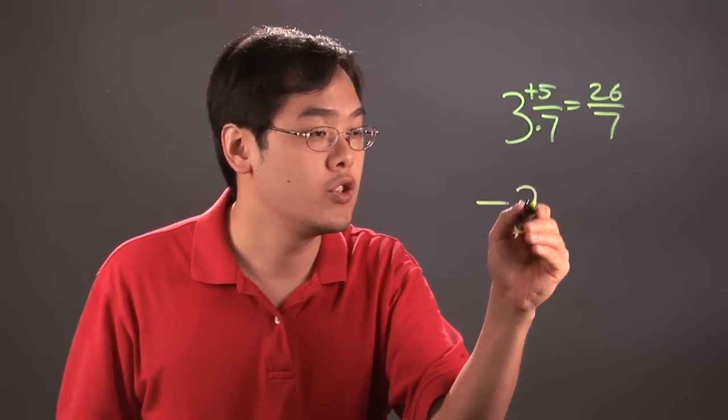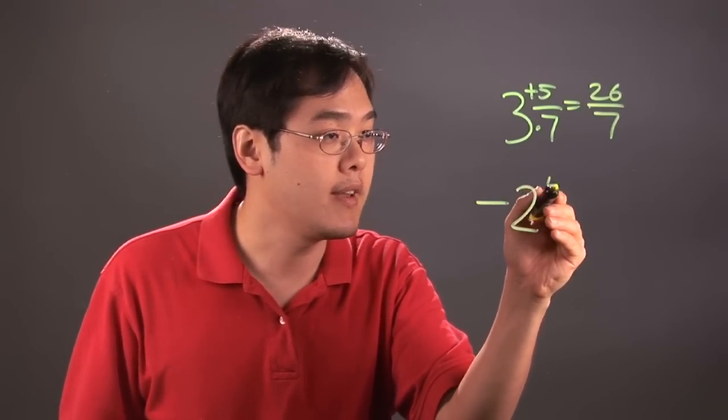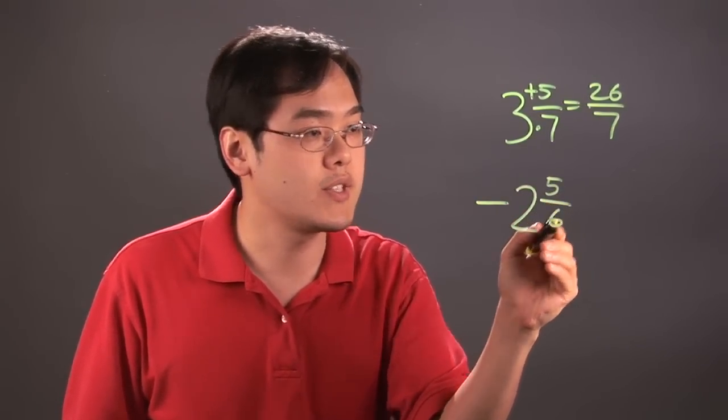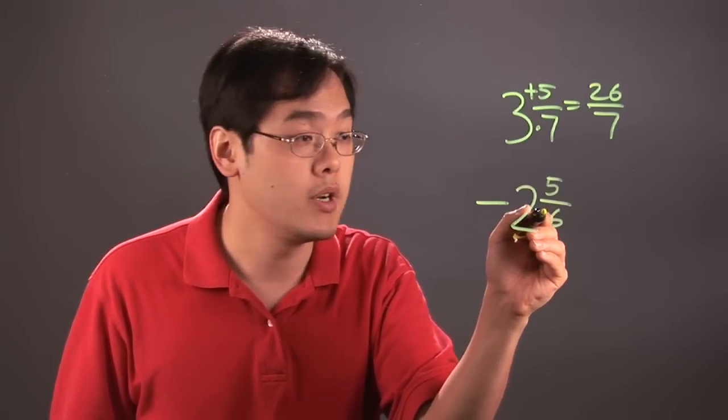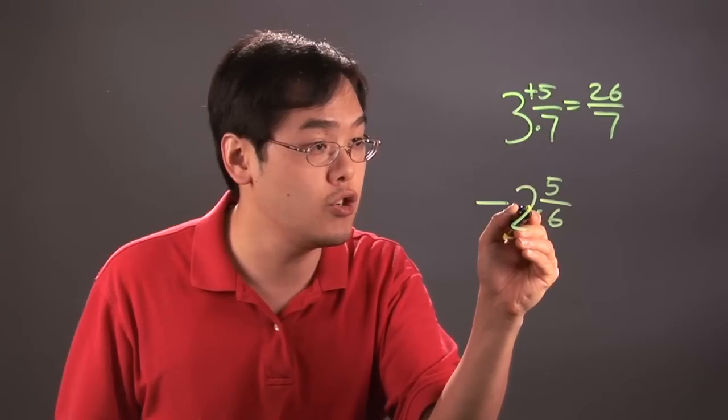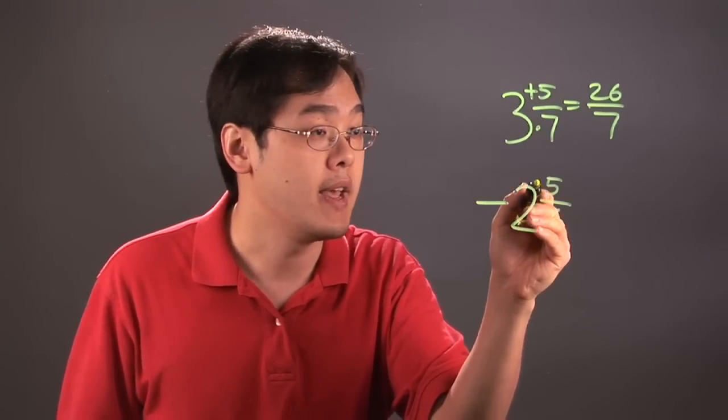If you have negative 2 and 5 sixths as an illustration, exact same idea. Take the denominator, multiply by the whole number, so 6 times 2 which is 12, and then add the 5.